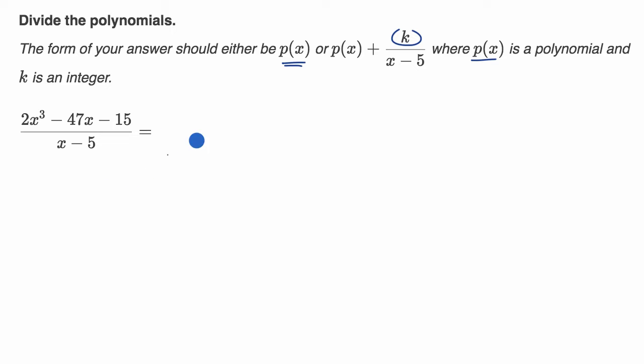All right, so we're trying to figure out what x minus five divided into 2x to the third power. And actually, I want to be careful here because I want to be very, very organized about my different degree columns. So this is my third degree column.